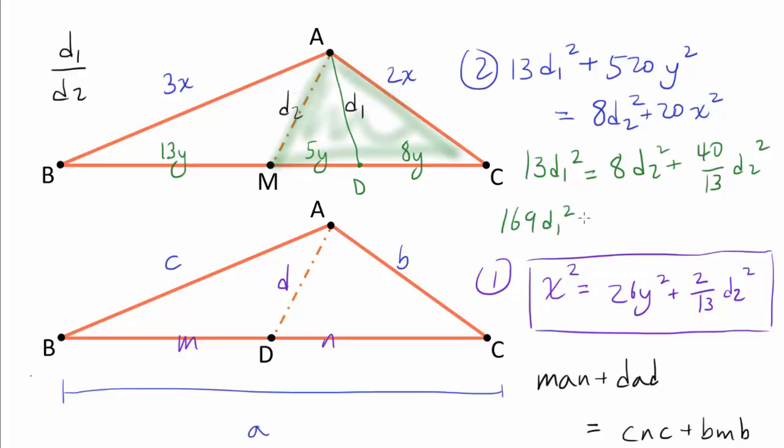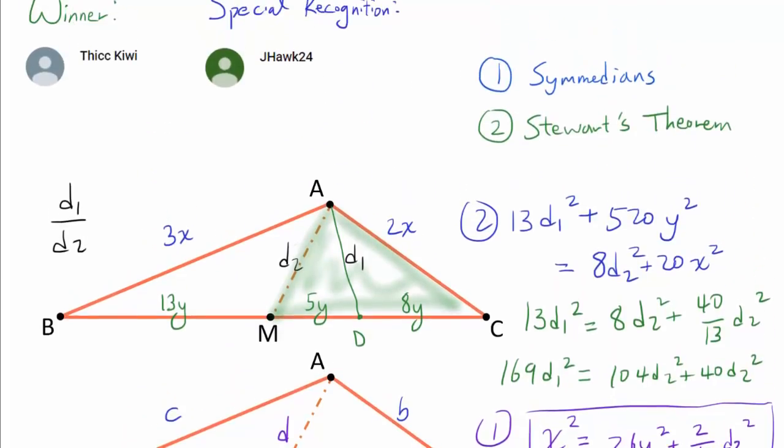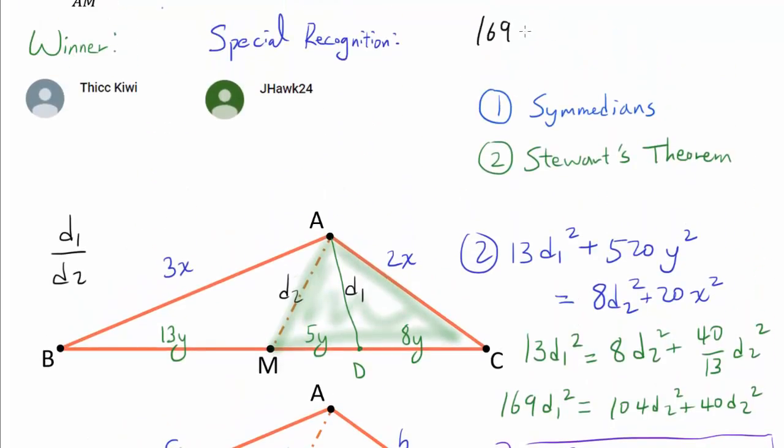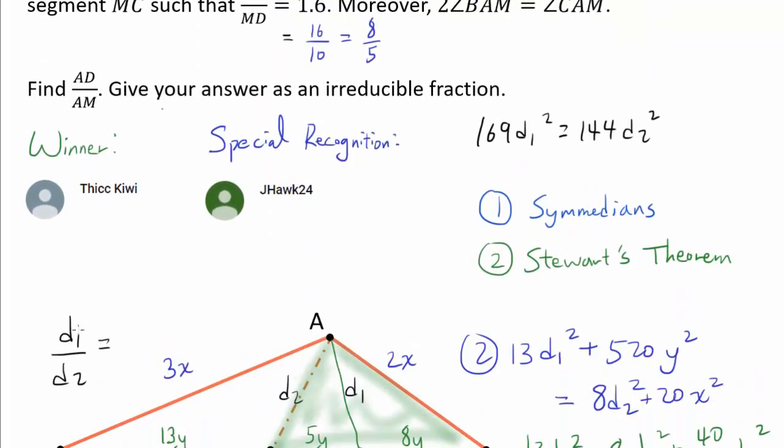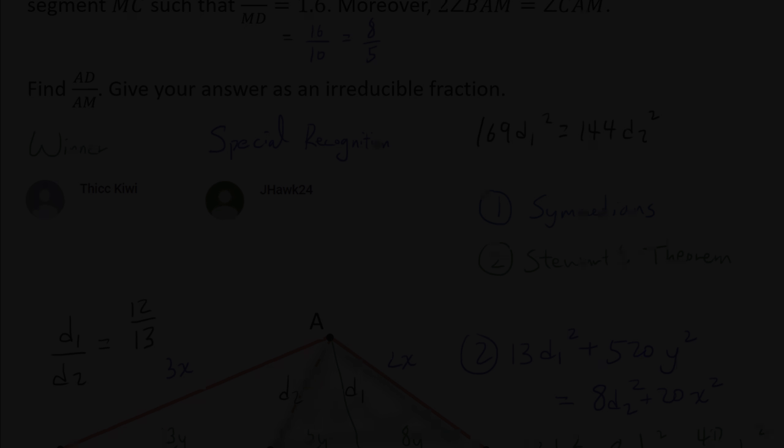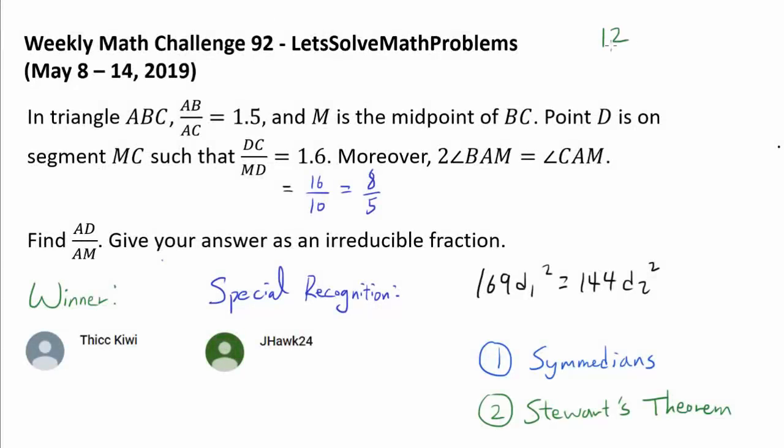And we may write this as 169D1 squared is 144D2 squared. From here, we immediately get D1 over D2 is 12 over 13 by just rearranging this, and we get the same result. So, once again, we arrive at the conclusion that the answer is 12 over 13, and we are done.